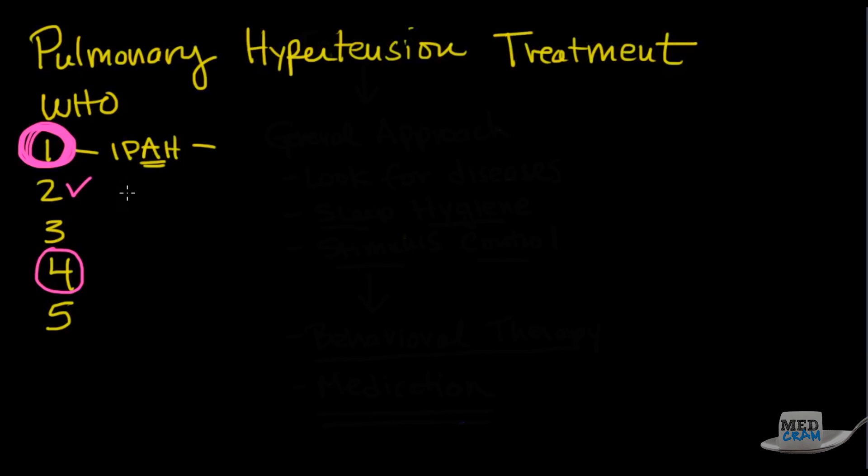Group 2 is exclusively due to left ventricular failure. Group 3 has to do with lung disease. And group 5 is kind of a grab bag. So these already have their treatments specifically for them. 1 has a whole bunch, which we're going to talk about. And there is one that is indicated for 4.